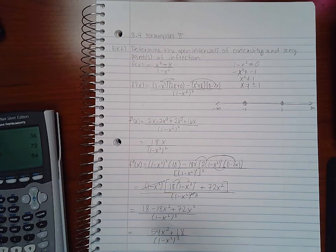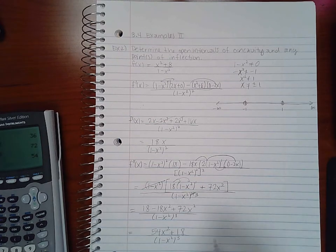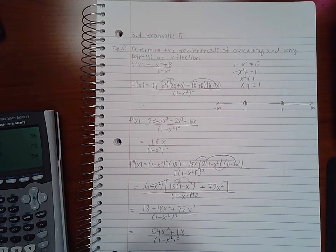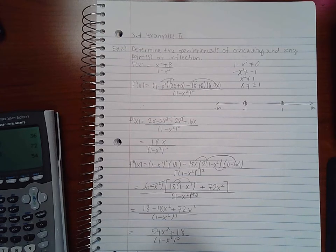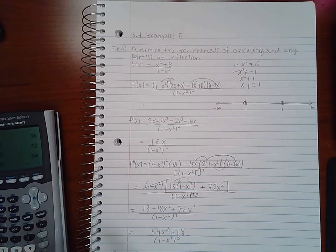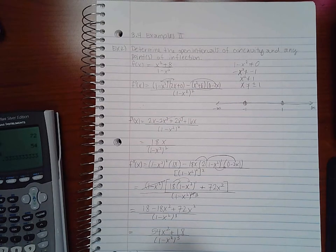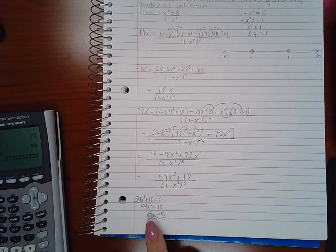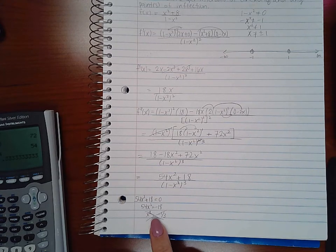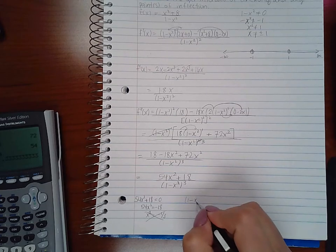So I do need to figure out where this equals 0 and where it is undefined. It equals 0 when the numerator equals 0. If I minus 18 on both sides and divide by -54 and reduce, I get x² = -1/3. But when you take the square root of negative 1/3, you won't get any real numbers. Therefore, you aren't going to get any critical numbers from this particular equation.